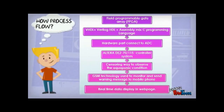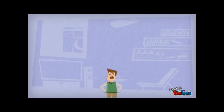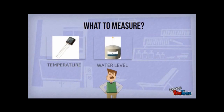The flowchart shows the process flow of the Smart Aquaphonic Monitoring System. The system measures three types of variables, which are temperature, water level, and light.